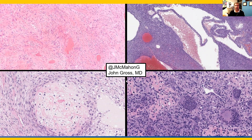At the top left is a spindle cell sarcoma that is variably pleomorphic but relatively bland — this is fibroblastic osteosarcoma. You can see various foci of more well-formed osteoid here without osteoblastic rimming.